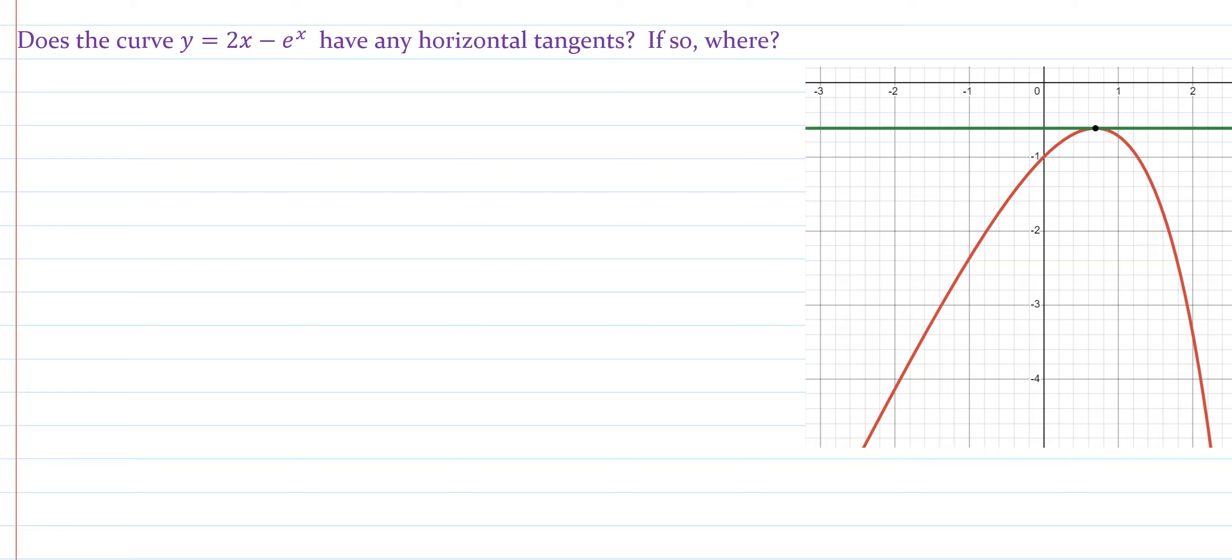The question is asking, does the curve y equals 2x minus e to the x have a horizontal tangent line at all? And if it does, where is it?